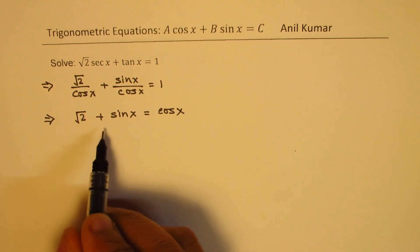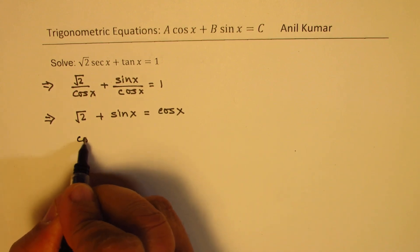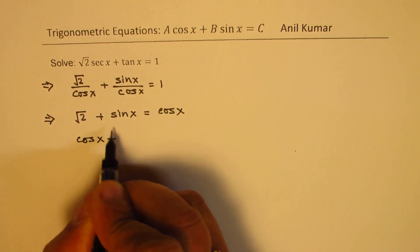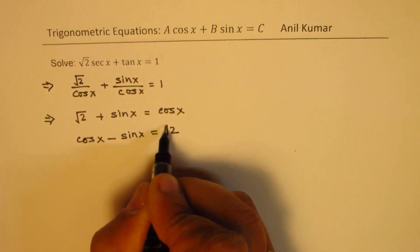Now that can be simplified. We can now write this as cos x minus sin x equals to square root of 2.